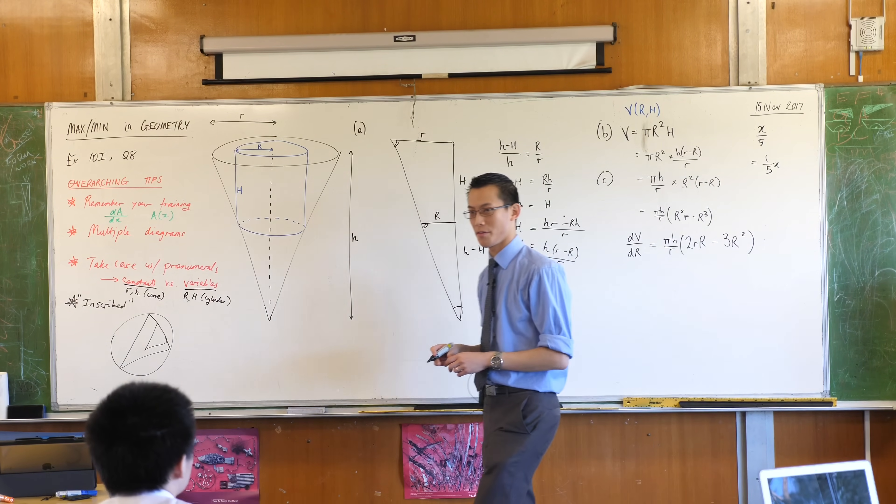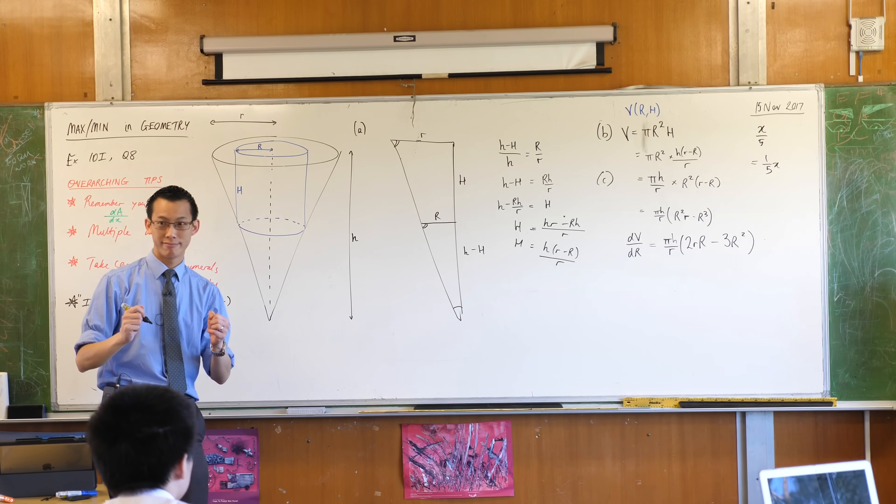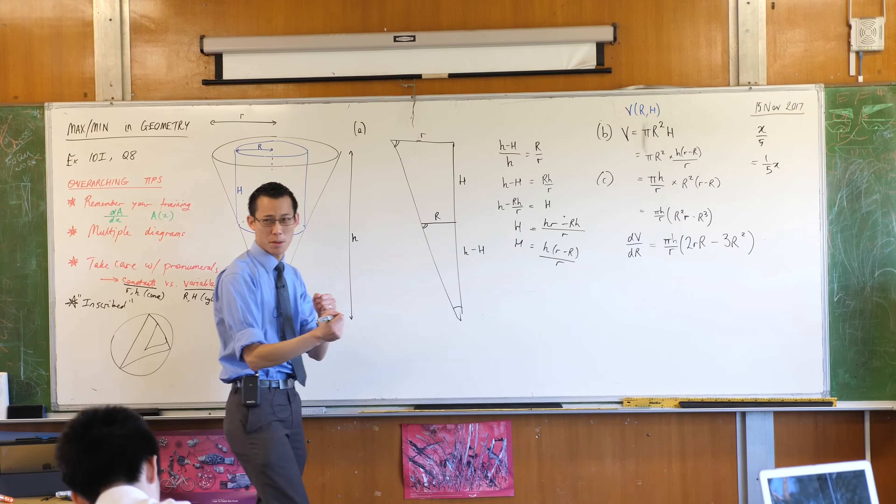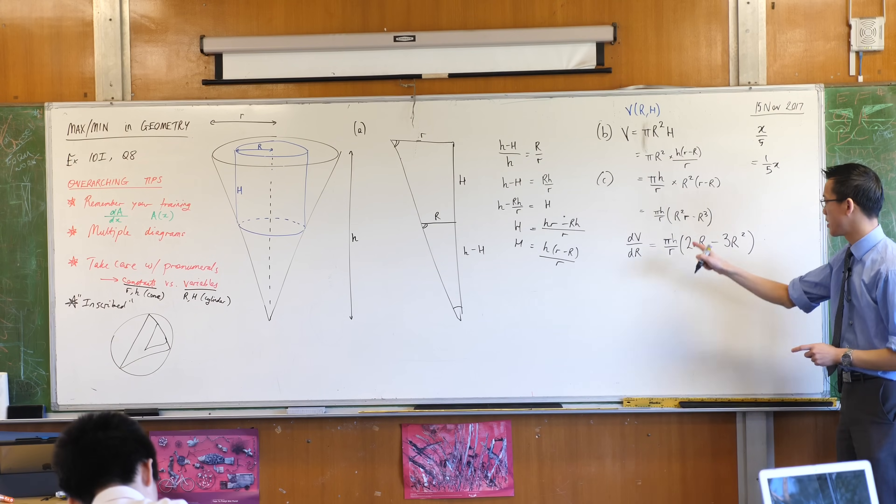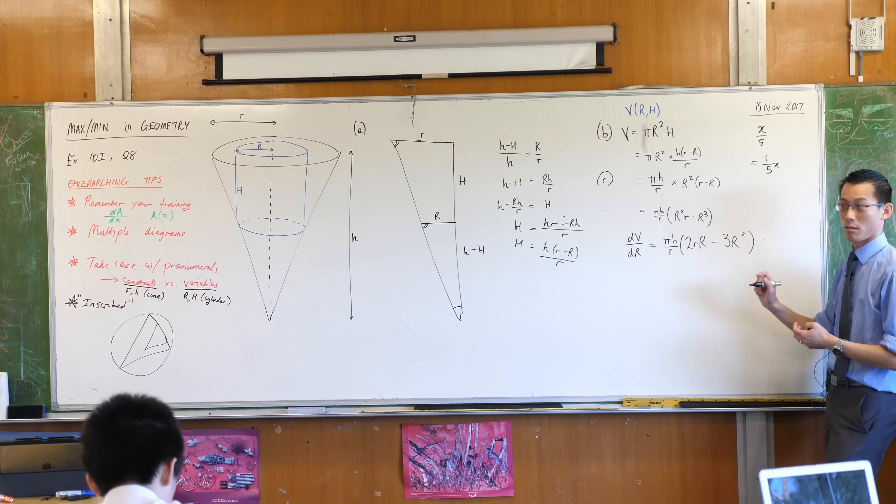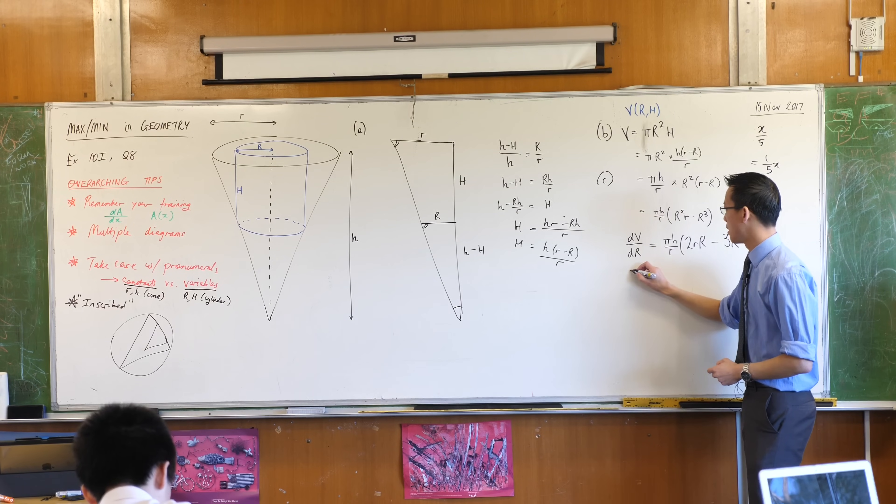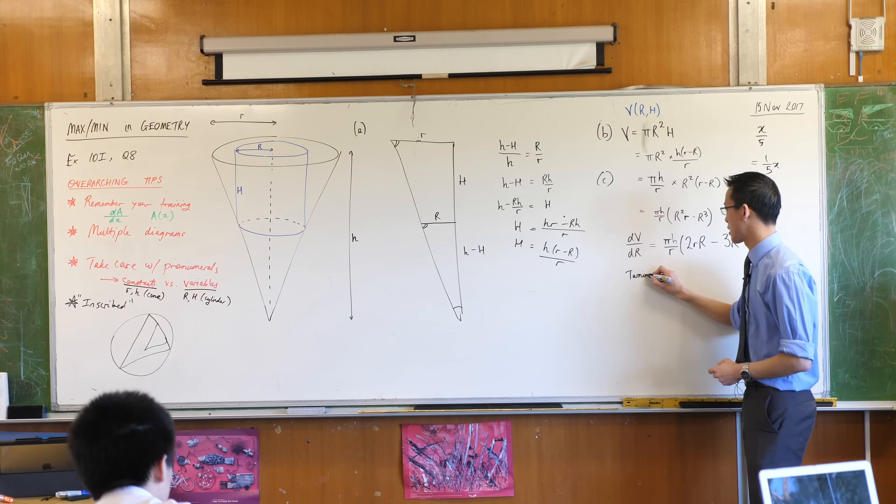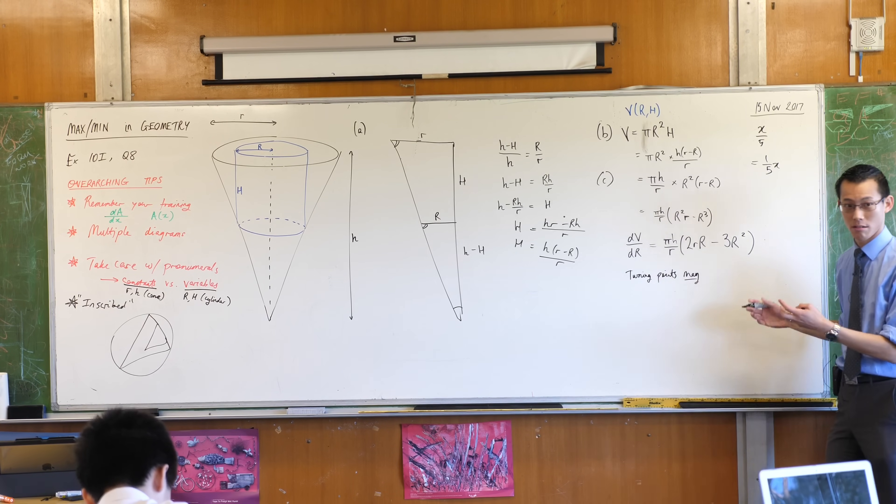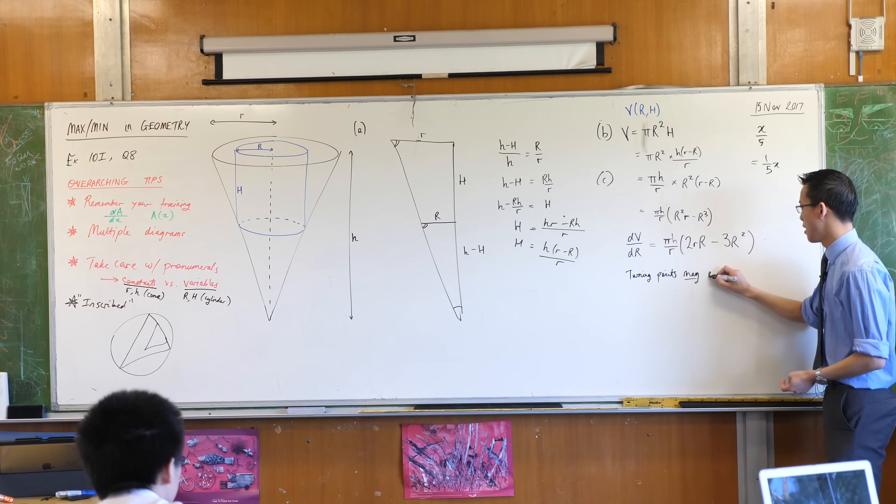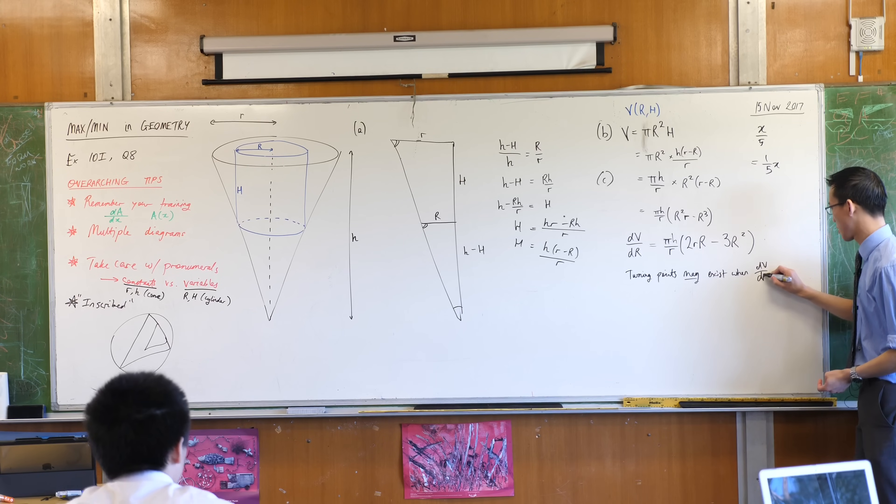Now that I have a derivative, what do I do with it for a max-min question? Let's look for some stationary points, because hopefully some of them are not just stationary points, they are turning points. I don't know that for sure, by the way. See how there's a cubic? Sometimes they have horizontal points of inflection. We're about to find out. So I would say turning points, because that's what I'm searching for, they may exist, because remember, no guarantees, I might turn up with a horizontal point of inflection, they may exist when the derivative is zero, capital R.